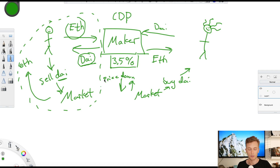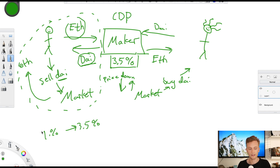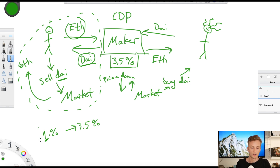This creates larger selling pressure. What Maker has been doing is increasing the stability fee from around 1% to now 3.5%. That is the interest people pay on their loans. This has had some positive effects — it has spiked the DAI price when they did it — but the trend is still that the DAI price is below one dollar, which it is supposed to be pegged to. So they've increased the stability fee and interest rate a lot.